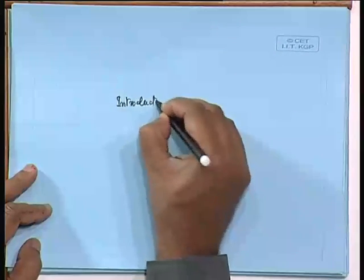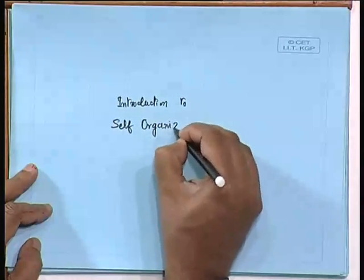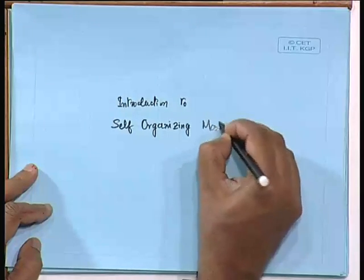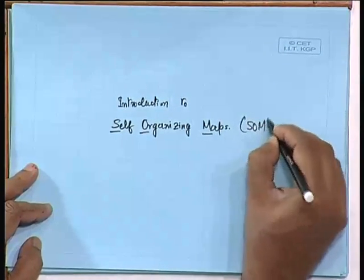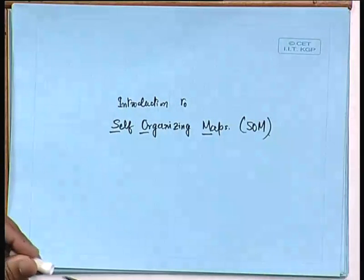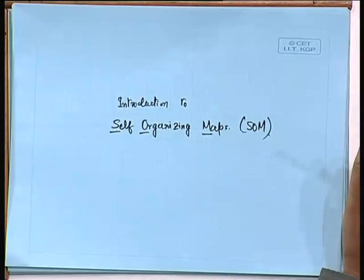The topic for today is Introduction to Self-Organizing Maps, in short form referred to as SOM. This is a new chapter we are going to learn in this lecture. We already had an idea about Principal Component Analysis, and we had seen how PCA can be realized using neural networks, using the linear neural network model.